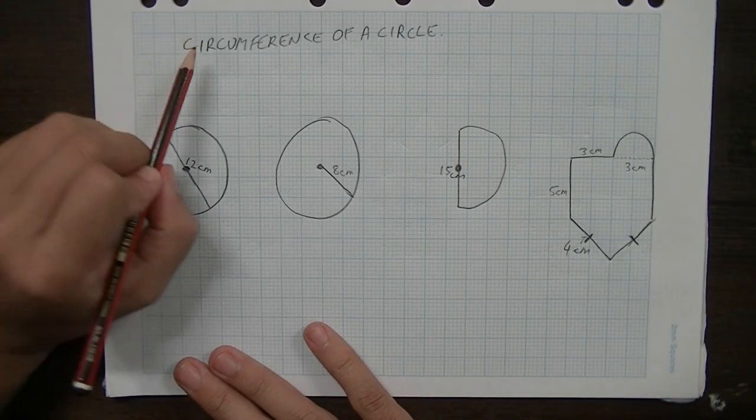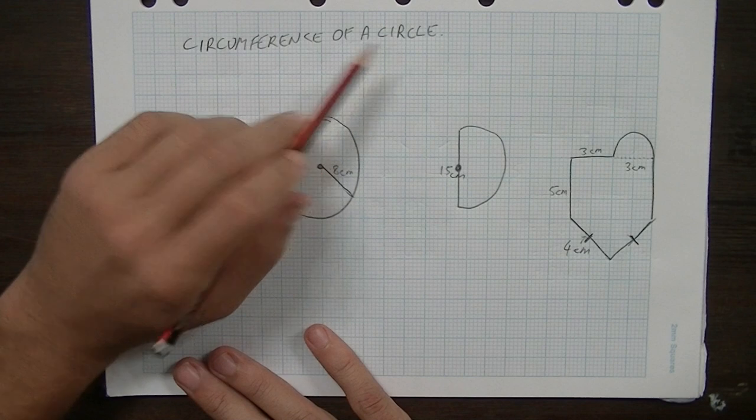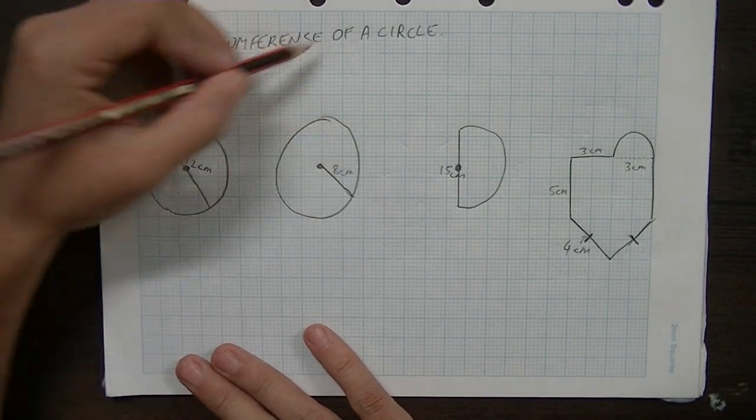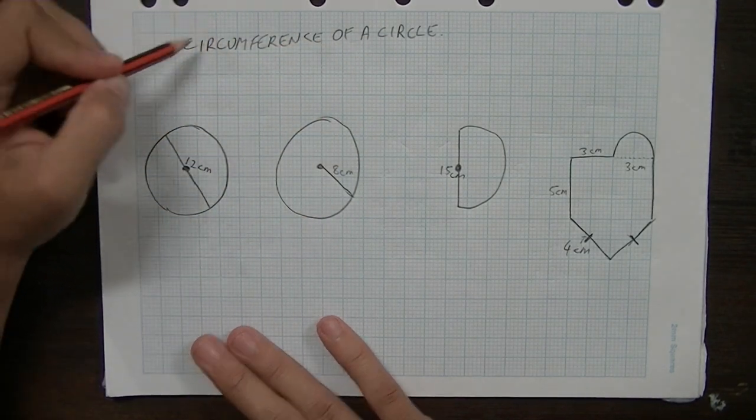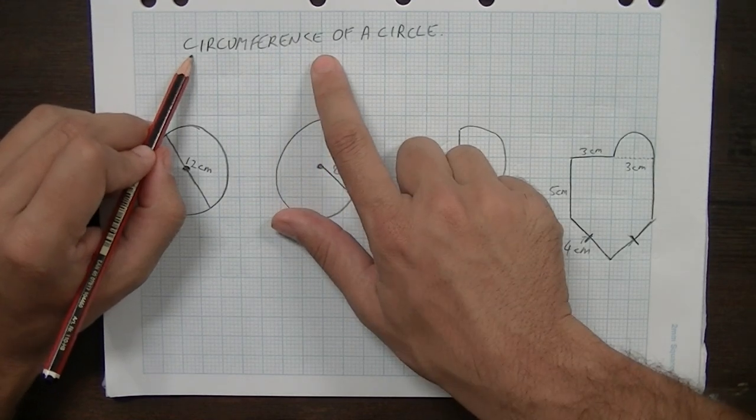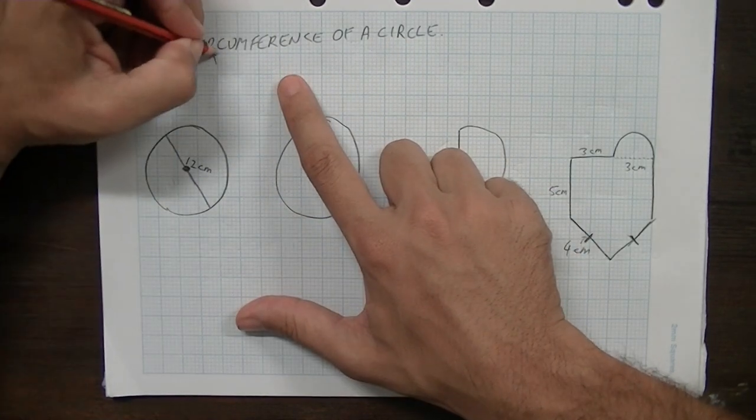Okay, so in this video we're looking at circumference of a circle. Now circumference of a circle, I don't know why we need to use a fancy word. Circumference is only ever used for circles, but it really just means perimeter.